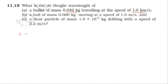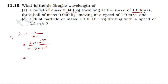The de Broglie wavelength formula is λ = h / momentum = h / (mass × velocity). For case one: h is 6.63 × 10⁻³⁴, divided by mass 0.04 into velocity 1 kilometer per second, which is 10³ meters per second. The answer is 1.7 × 10⁻³⁵ meter.